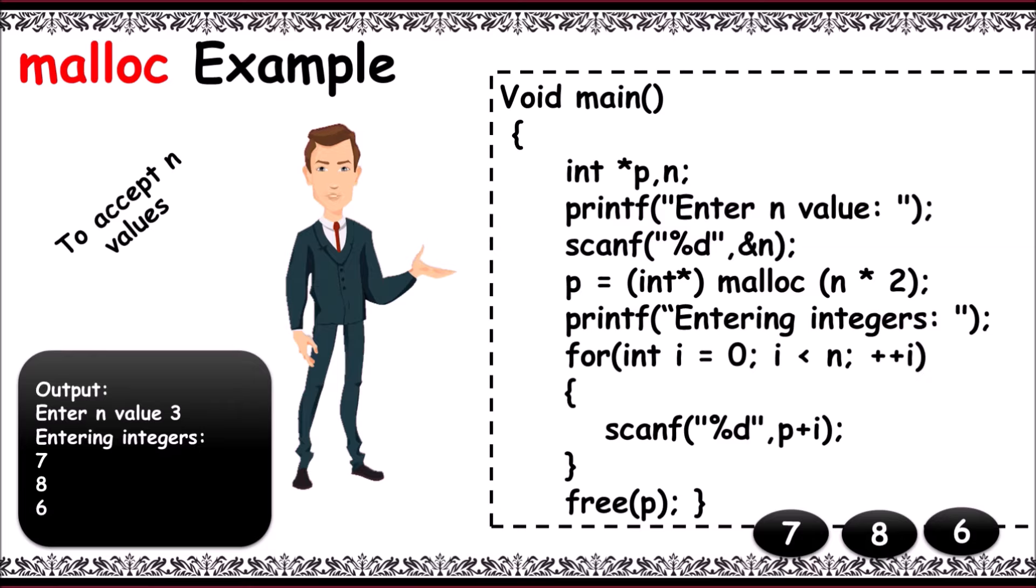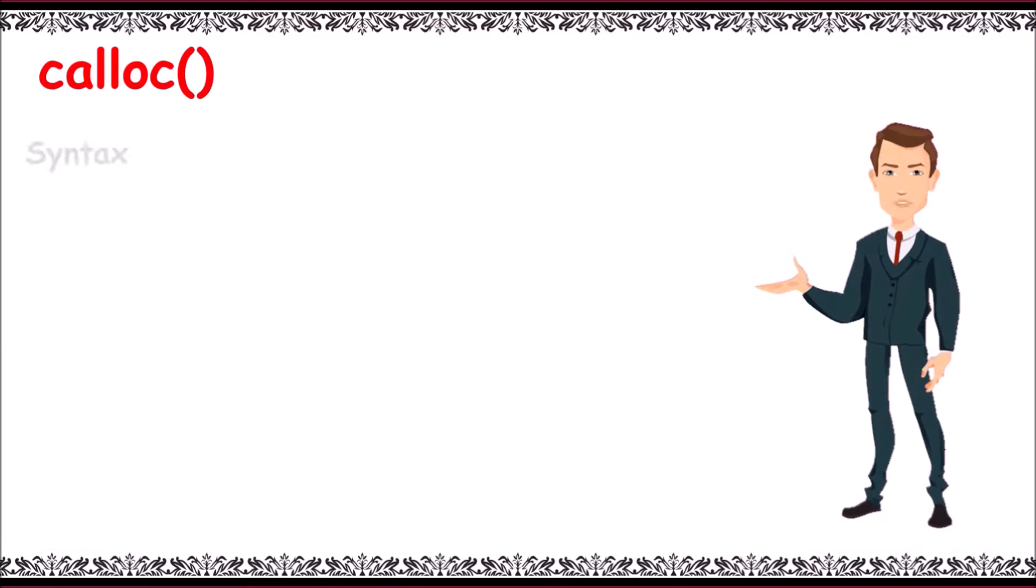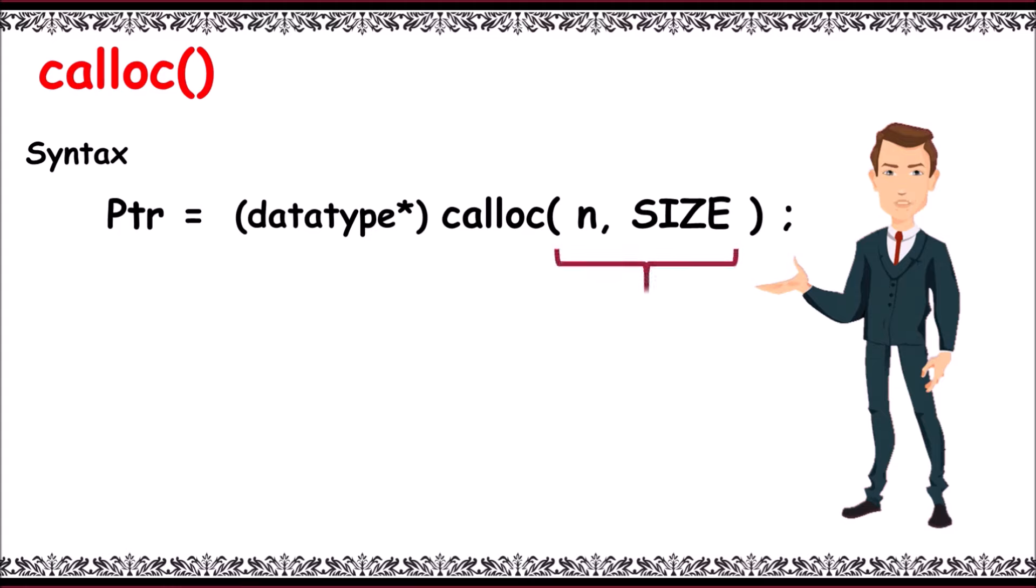Next, calloc. The syntax is similar to malloc function: pointer data type asterisk calloc of n comma size. In calloc, we use two arguments. N specifies number of elements, and size specifies each element size. And the default value for calloc is 0.